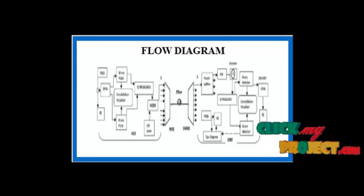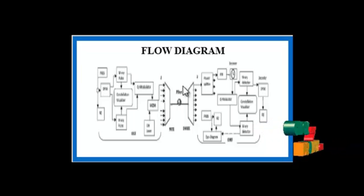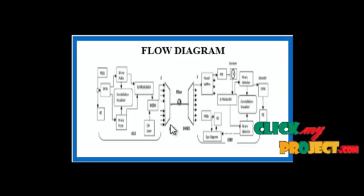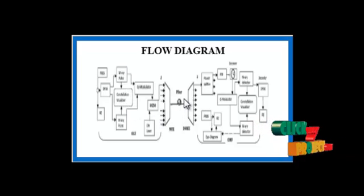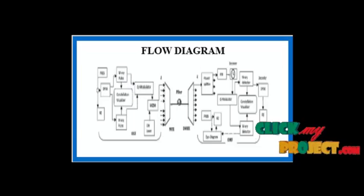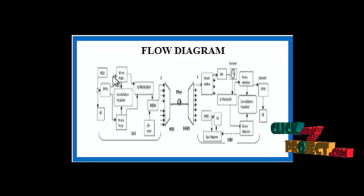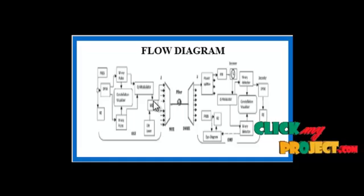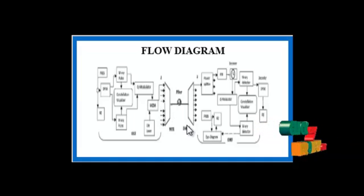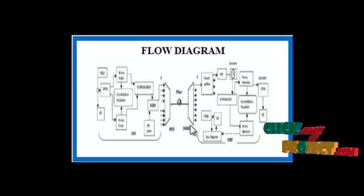We are now going to discuss the product flow diagram. This section briefly describes the simulation setup in OptiSystem version 10, where all necessary parameters are based on GPON standardized properties. This block shows the hybrid WDM and TDM-PON scheme.